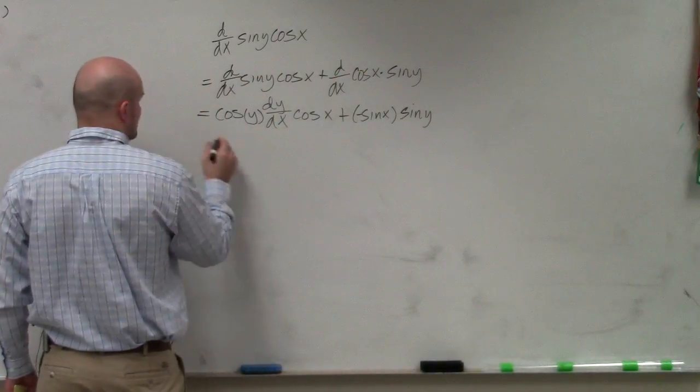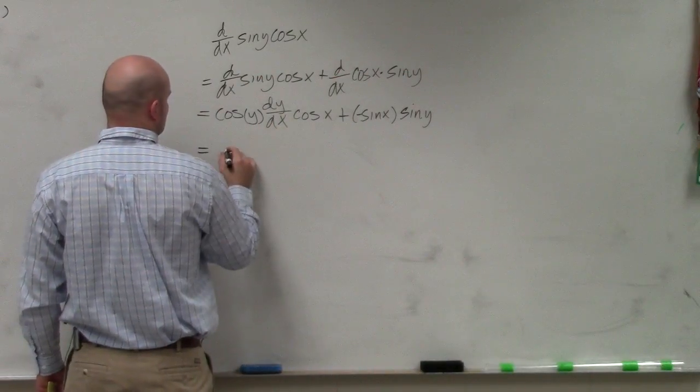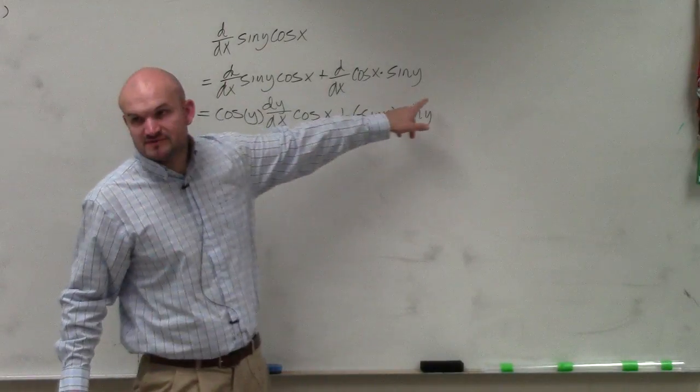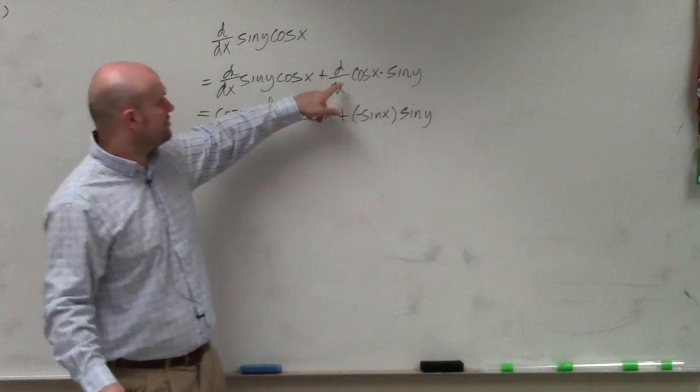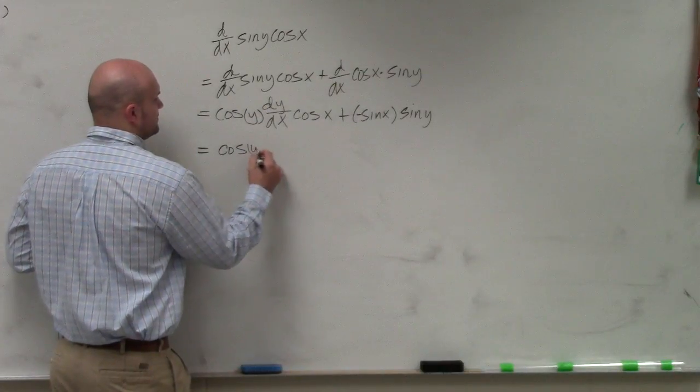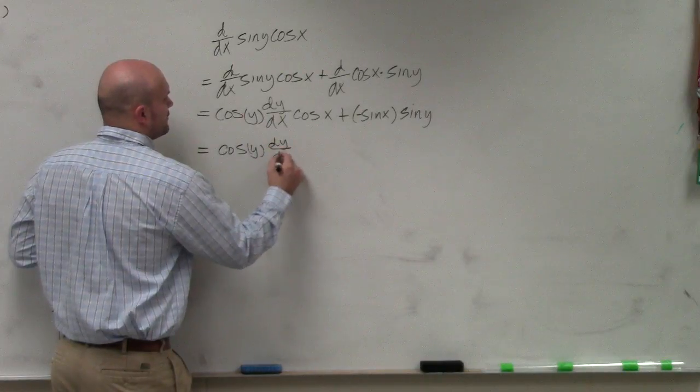And then I can just go ahead and rewrite this. So I didn't, because I didn't take the derivative of sine of y. I only took the derivative of cosine of x, right? So I have cosine of y dy over dx.